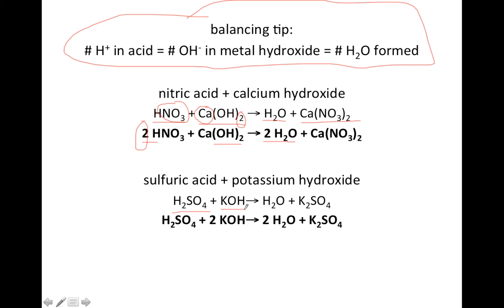Sulfuric acid and potassium hydroxide. Sulfuric acid is H2SO4, potassium hydroxide is KOH. One product is water. The other product: K is column one, so it's +1. Sulfate is known to be -2, so my formula's got to be neutral, so I make it K2SO4.